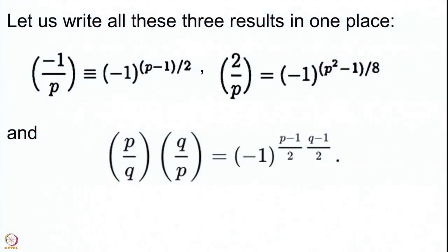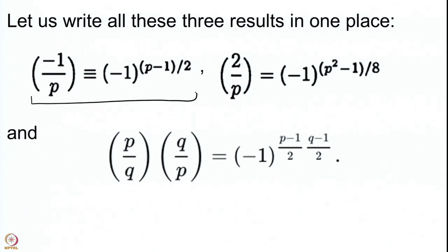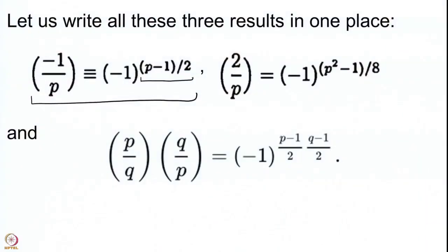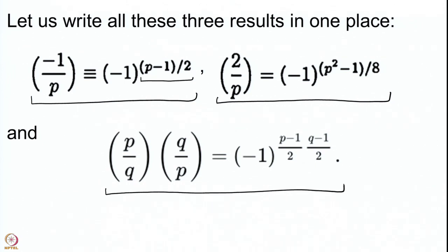There are three parts to the quadratic reciprocity law. The first tells you how to compute the Legendre symbol for −1: (−1/p) = (−1)^((p−1)/2), which is Euler's criterion and shows clearly when −1 is a square mod p and when it is not, for odd primes. For p = 2, all nonzero numbers are congruent to 1 mod 2 and are all squares, so we only consider odd primes. The second law tells you when 2 is a square mod p.